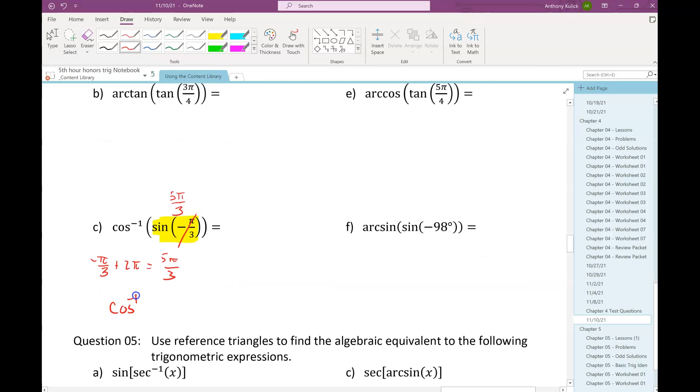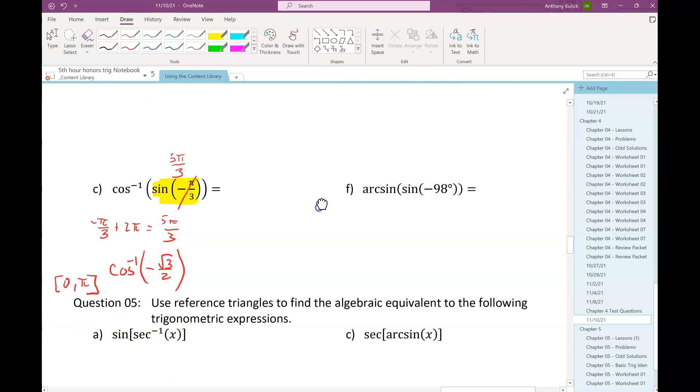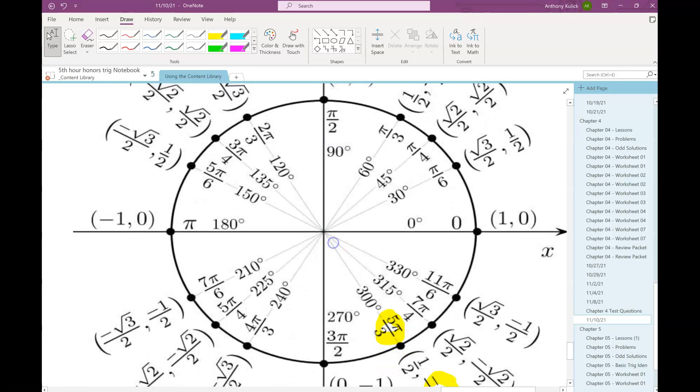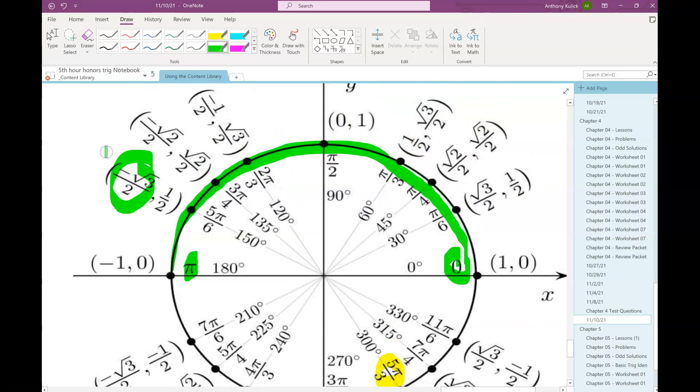So this is going to be cosine inverse of negative square root 3 over 2. I know that the fundamental range for cosine inverse is 0 to pi. So if I'm not given an interval over which to work with, I need to make sure I remember those fundamental ranges for the inverses. So I'm going to go back to my unit circle, look in quadrants 1 and 2. That is between 0 and pi for the place where the x coordinate is negative root 3 over 2. So going from 0 to pi is like this section, right? Looking for the place where x is negative root 3 over 2, 5 pi over 6. And that's my answer.